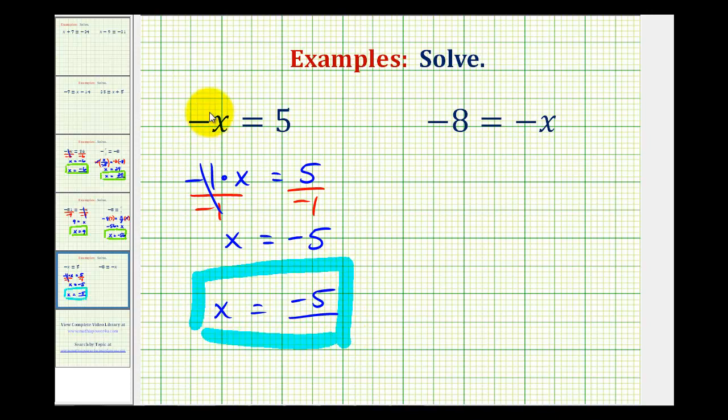So now if we go back and think of this negative sign as the opposite, we can think of this as the opposite of x is equal to positive 5. So hopefully it makes sense that x is equal to the opposite of positive 5 or negative 5.